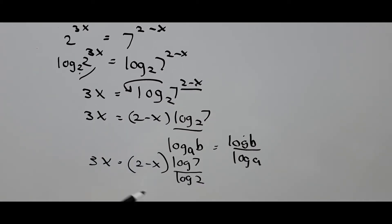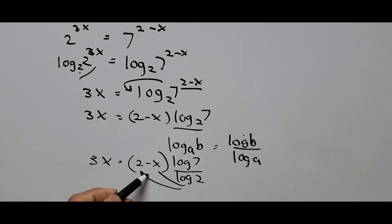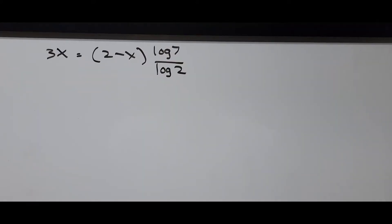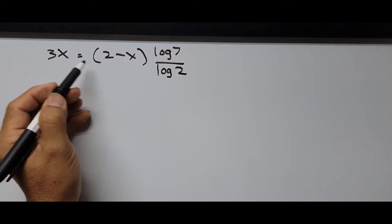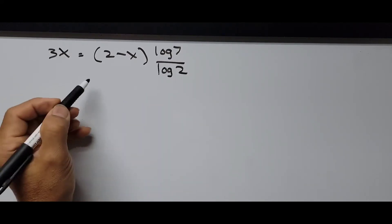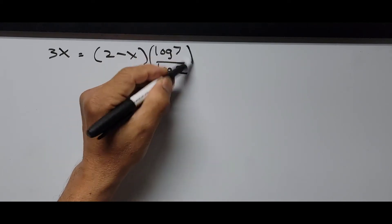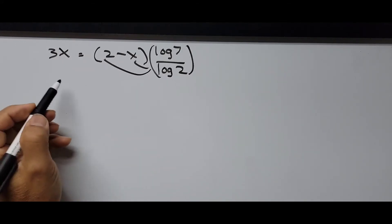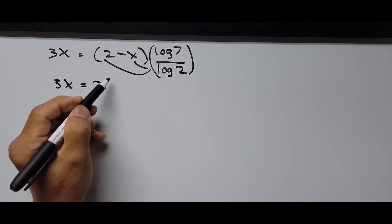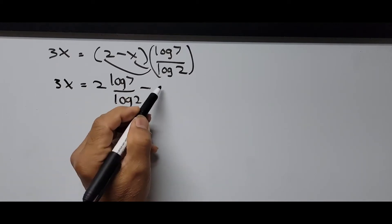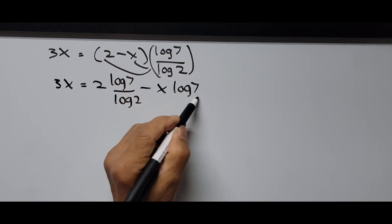From here we apply the distributive property — multiplying (2 minus x) through by log(7)/log(2). So we have: 3x equals 2·log(7)/log(2) minus x·log(7)/log(2).